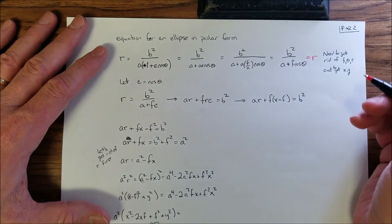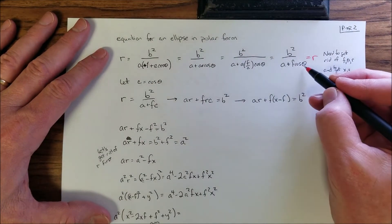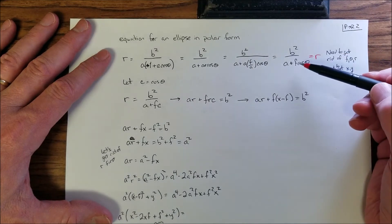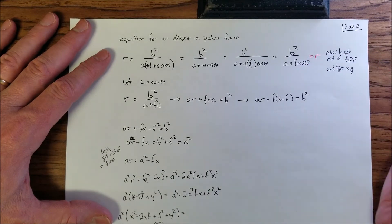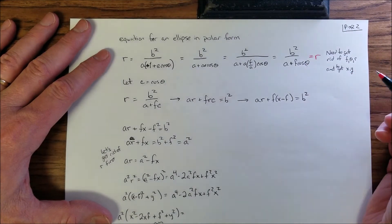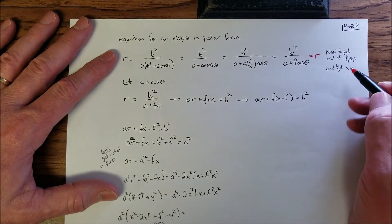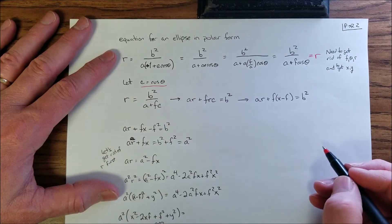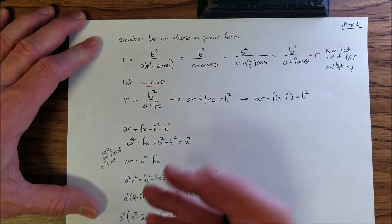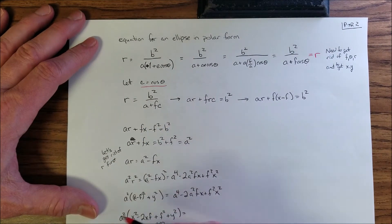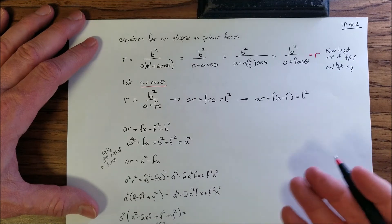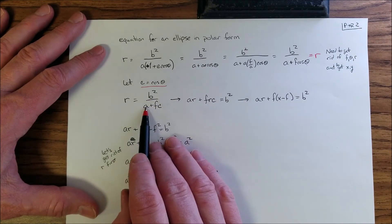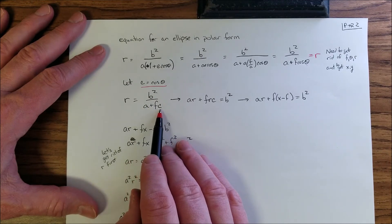Now, to convert to rectangular form, we need to eliminate r, theta, and f, and introduce x and y. For ease of writing, I'll let c equal cosine of theta — the more I write, the more likely I am to make a mistake — so r equals b squared over (a plus fc).